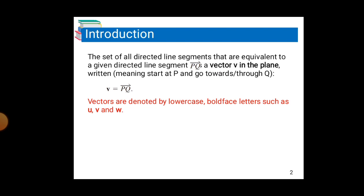The set of all directed line segments that are equivalent to a given directed line segment PQ is a vector v in the plane. We write v = vector PQ, where the direction is from P towards Q. Vectors are denoted by lowercase boldface letters such as u, v, and w.